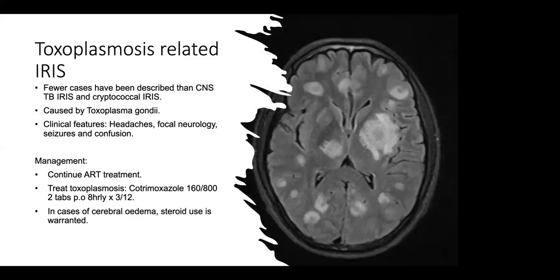Toxoplasmosis-related IRIS: there are fewer cases described of toxoplasmosis-related IRIS than TB IRIS. It is caused by Toxoplasma gondii. Clinical features include headaches, focal neurology, seizures, and confusion. Management: continue ARVs, treat toxoplasmosis with cotrimoxazole two tablets eight-hourly for three weeks. In cases where the patient has cerebral edema, corticosteroids can be used.